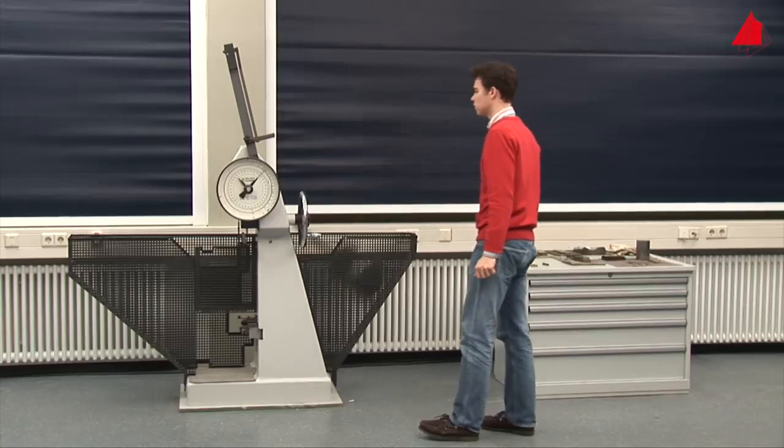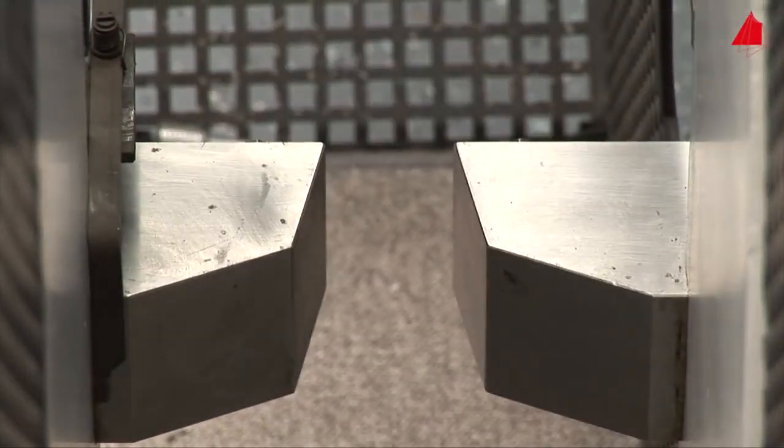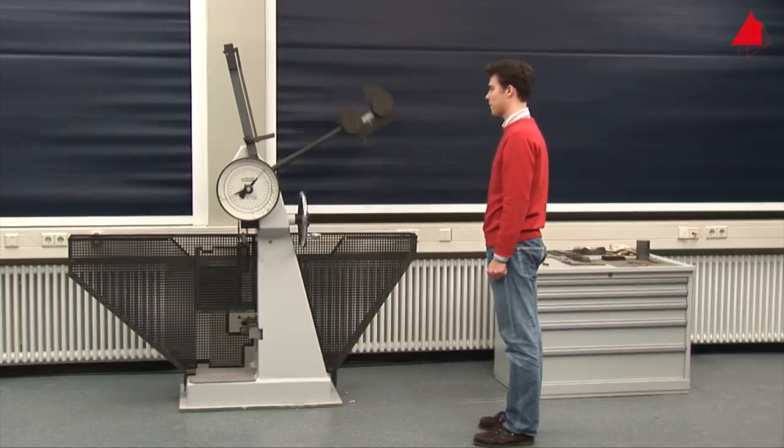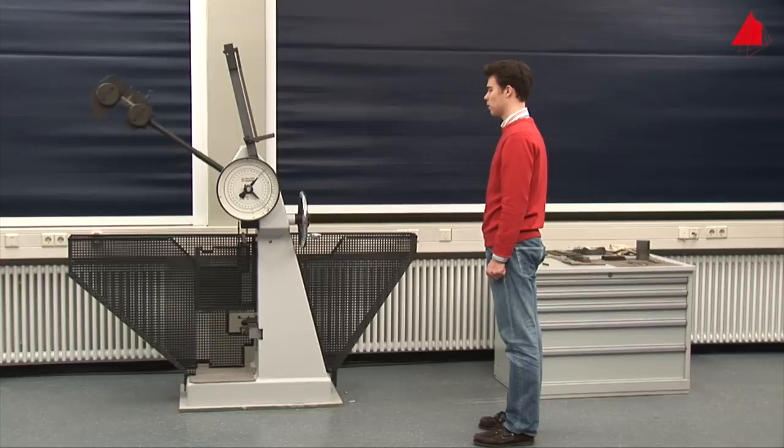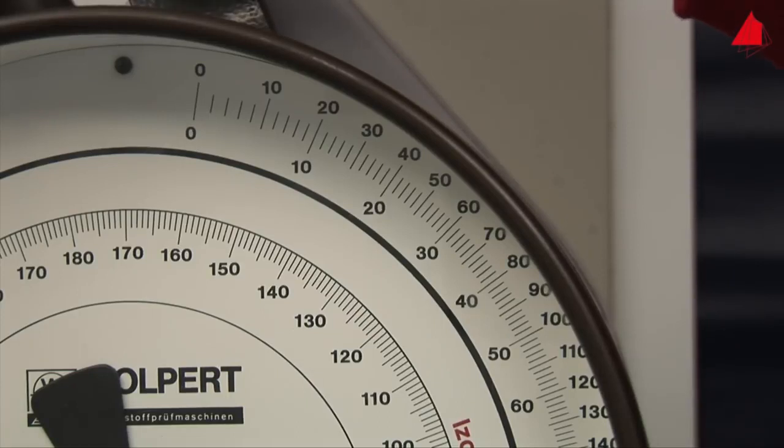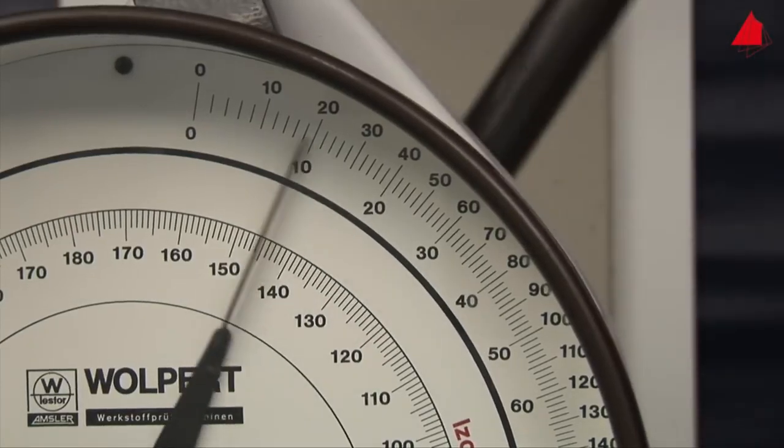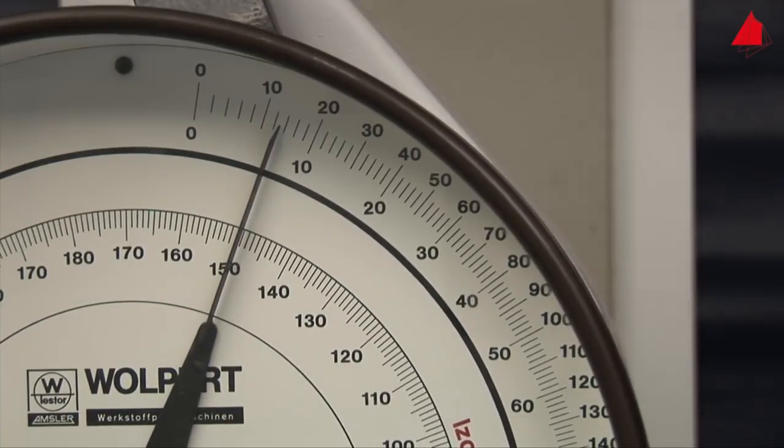The pendulum is released. It swings downwards and hits the specimen with its rounded hammer pin. The specimen absorbs part of the pendulum's energy so the pendulum doesn't reach the full height on the other side. The amount of energy that has been absorbed by the specimen can now be read off at the position of the drag indicator. It only amounts to 13 joules in this test.